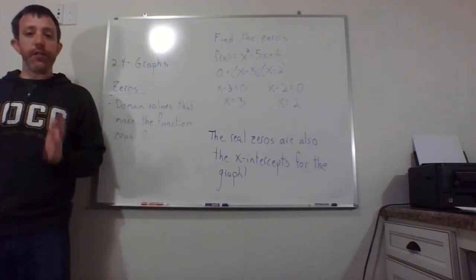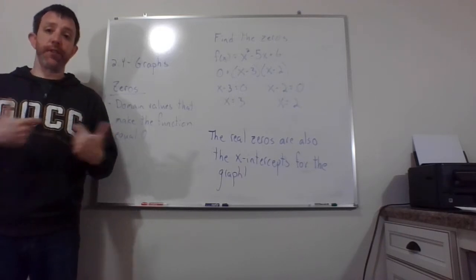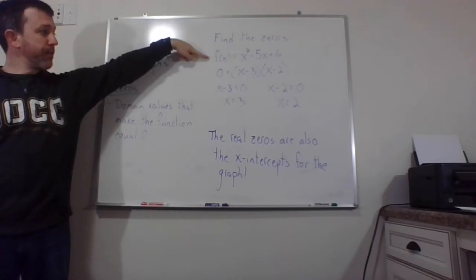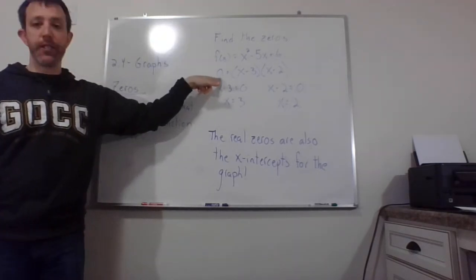Zeros. Zeros for functions are domain values that cause the function to spit out zero. So for instance, if we want to find the zeros of this function, we're going to start by setting it equal to zero.